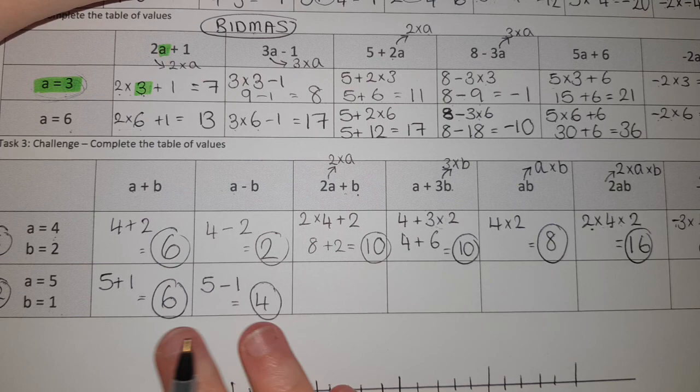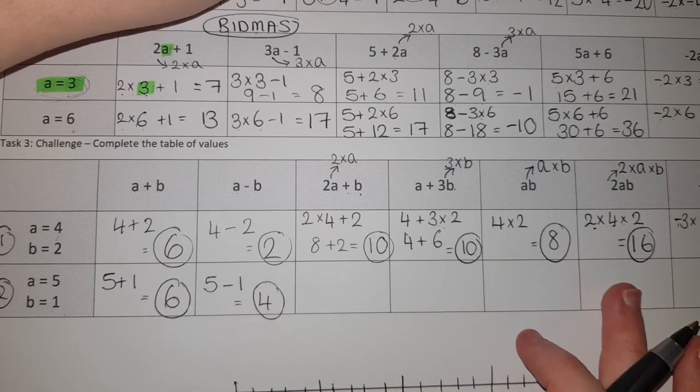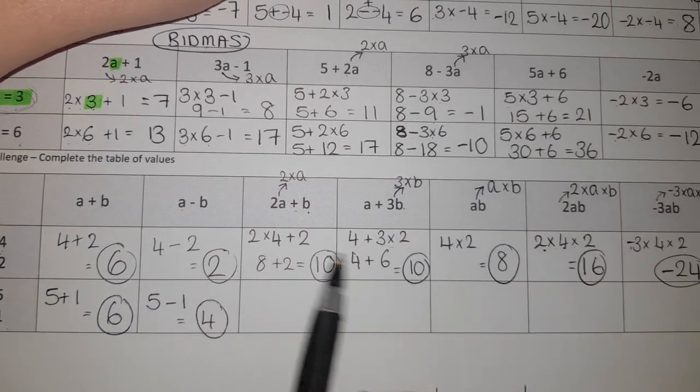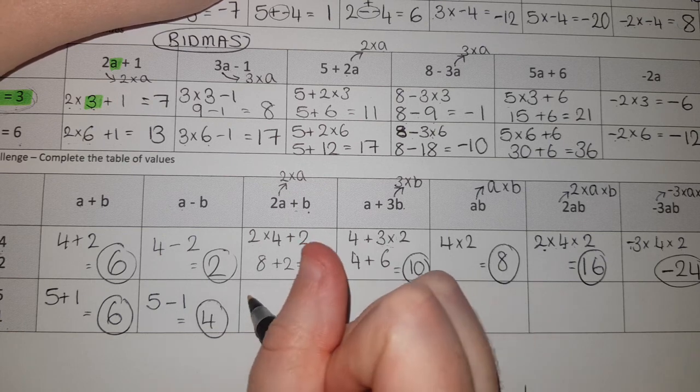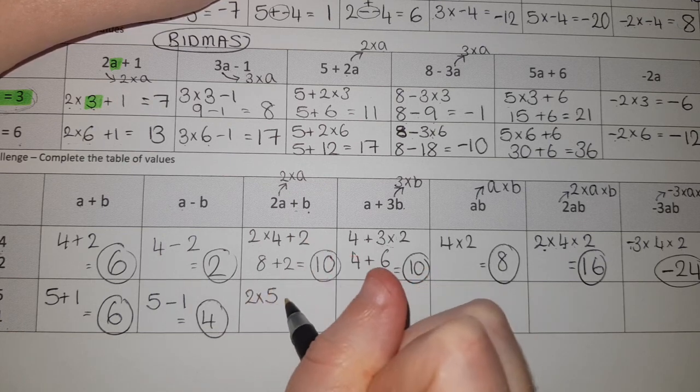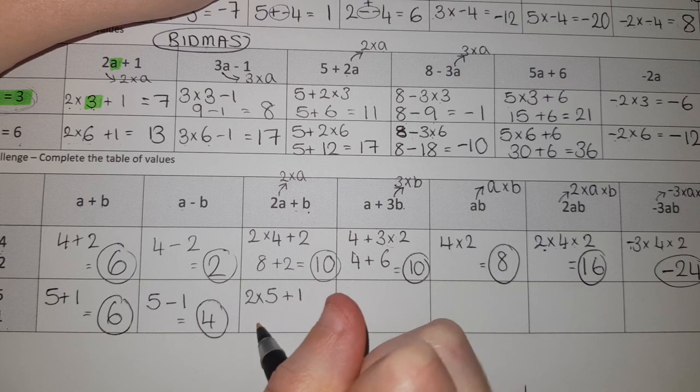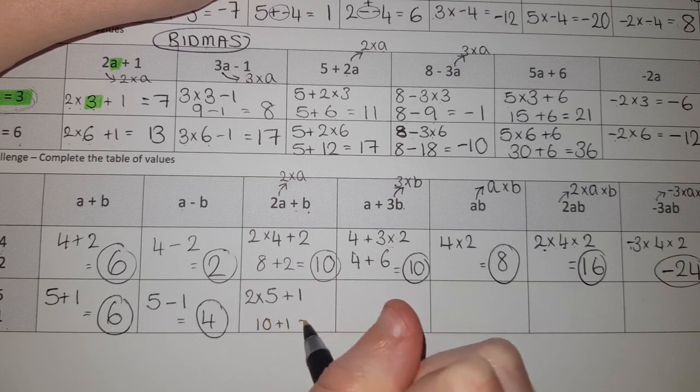This is where we start getting multiplying in there. So two times A, which is five, and then add on one. Two times five is ten, plus one gives me eleven.